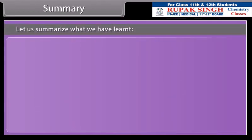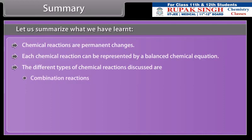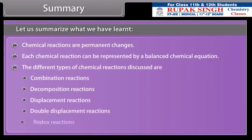Summary: Let us summarize what we have learned. Chemical reactions are permanent changes. Each chemical reaction can be represented by a balanced chemical equation. The different types of chemical reactions discussed are combination reactions, decomposition reactions, displacement reactions, double displacement reactions, and redox reactions.